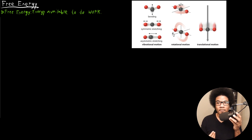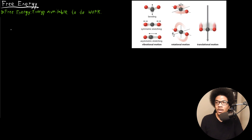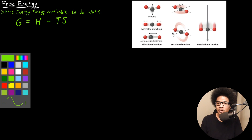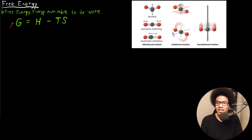The general definition of free energy is the energy that is available to do work. The equation for free energy uses the variable G — capital G denotes the free energy — and it's going to be equal to the enthalpy minus the temperature times the entropy. So this is our equation for the free energy. G is the free energy, H is the enthalpy, and S is the entropy.